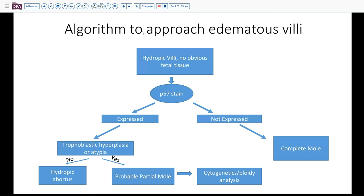So how do we approach this? There is an algorithm that's recommended. If we see hydropic villi and no obvious fetal tissue, a p57 stain will be very useful. If p57 is not expressed, we can make the diagnosis of complete mole. On the other hand, if it is expressed, then we begin to look at a couple of other things: is there trophoblastic hyperplasia or any degree of atypia? If not, probably this is a hydropic abortus. Some of these we may still want to do cytogenetics, particularly if it's a recurrent one. If we do see trophoblastic hyperplasia, atypia, or scalloping of the villi, this is probably a partial mole, and cytogenetics to document triploidy or other abnormalities may be useful. We can't always do this if we're only working with formalin-fixed tissue, but in general, this is the algorithm.